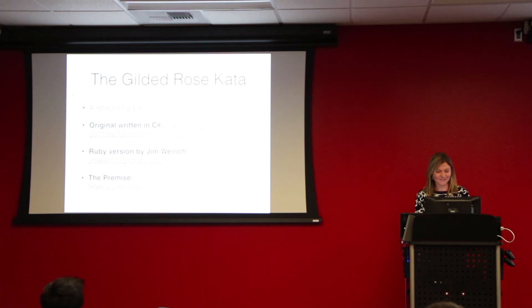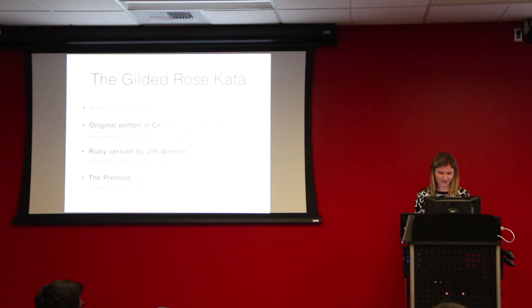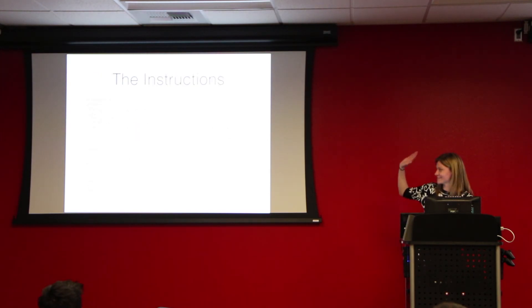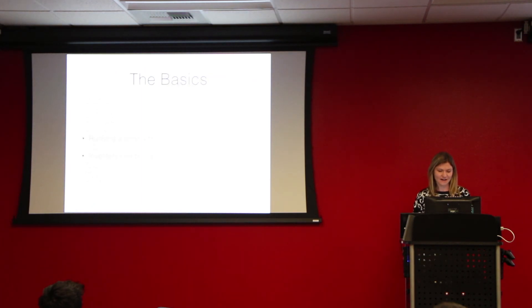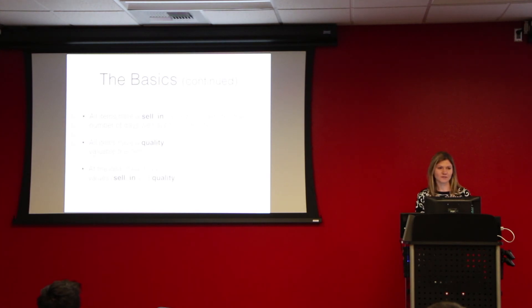This is the Gilded Rose Kata. I was actually working on just a single string kata, and then Jim Wyrick suggested this one. It was originally written in C Sharp, and he translated it into a Ruby Kata. The premise is that you're inheriting a very poorly written code base. It's like this giant paragraph of instructions, but the basics are that you are running a store that has an inventory, and the inventory needs to be updated daily. All of the items in your inventory have a selling value, which shows the number of days that you have left to sell the item before it's expired. They also have a quality value, which shows how valuable the item is.